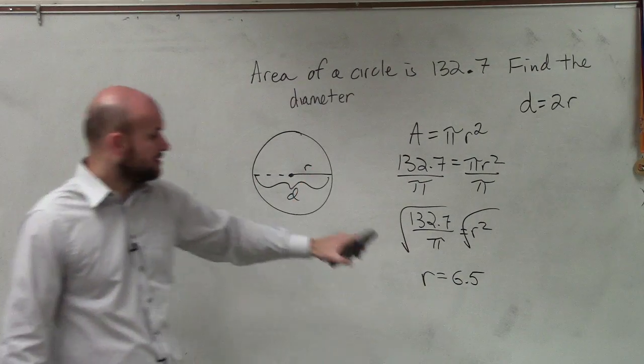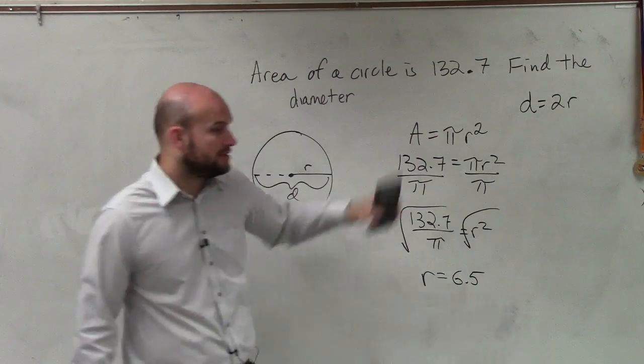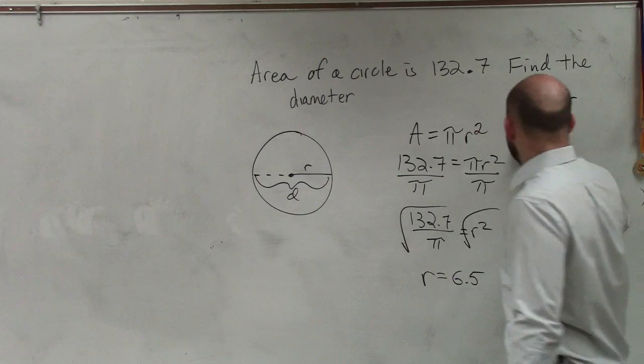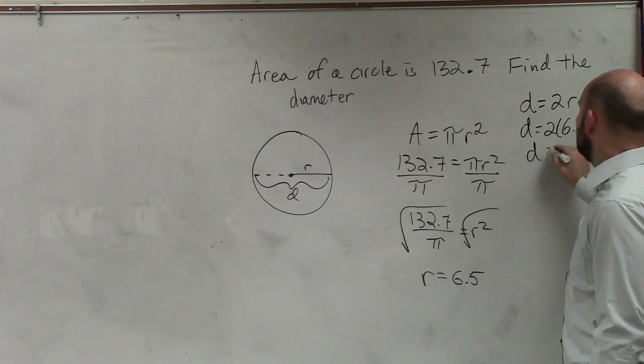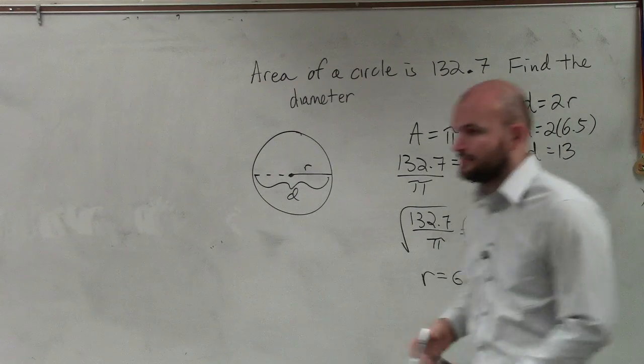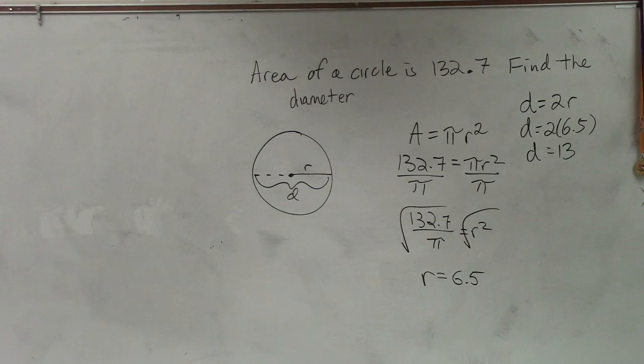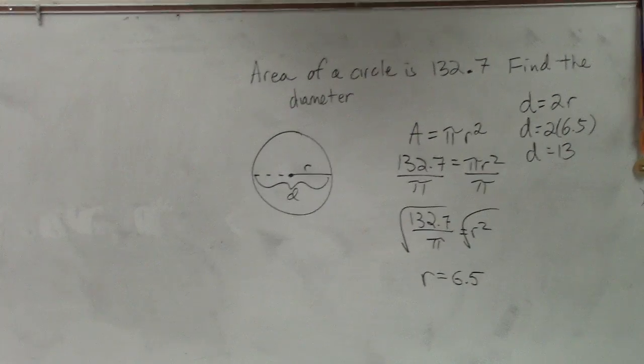Now, to find my diameter, I plug in my value of r into this equation. D equals 2 times 6.5. D equals 13. So if you got that answer, give yourself an m. If you only found the radius, but you...